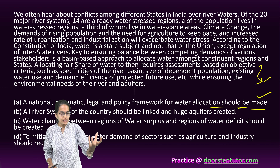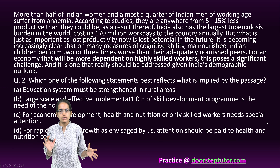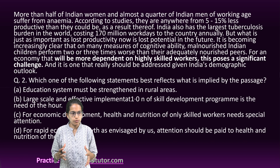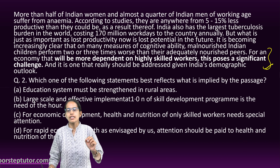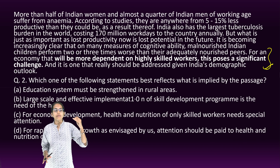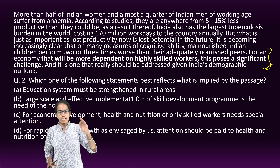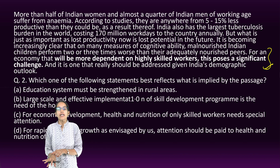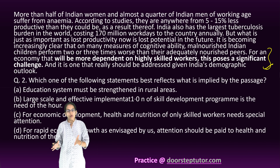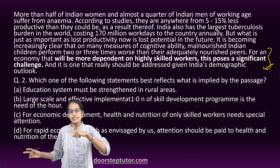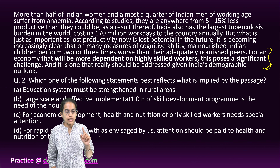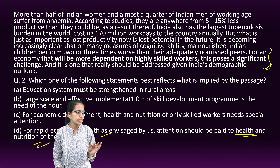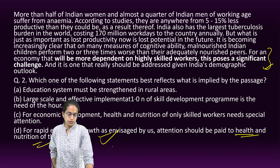Let's talk about the next passage question. This talks about the problem of anemia — a huge amount of population suffering from anemia. The key sentence is given in the last line: for an economy that will be more dependent on highly skilled workers, this poses a severe challenge. Because of anemia, cognitive loss and malnourishment would ultimately impact the skilled worker. That means for rapid economic growth as envisaged by us, attention should be immediately paid to health and nutrition. So D becomes the right option.